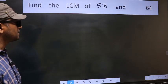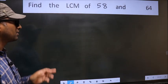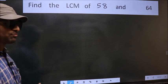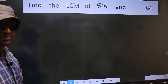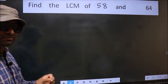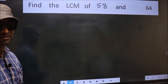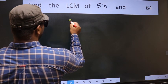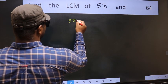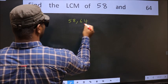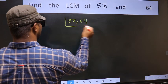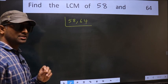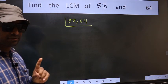Find the LCM of 58 and 64. To find the LCM, first we should frame it in this way: write 58 and 64. This is step 1.